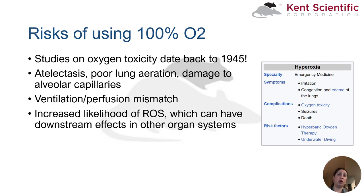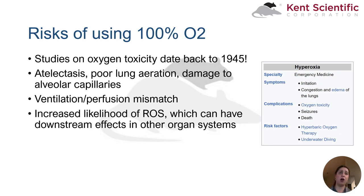First, some of the risks of using 100% oxygen as a carrier gas. In humans, oxygen toxicity has been studied — the earliest study we could find was published in 1945, so this is fairly well-known in human medicine, well-known to the point that there is an entire page on it on Wikipedia. Some of the risks seen in laboratory animals include complete or partial lung collapse, poor aeration, and damage to alveolar capillaries. There is also a ventilation-perfusion mismatch, and an increased likelihood of reactive oxygen species (ROS), which can have downstream effects in other organ systems — unintentional inflammatory factors that may affect systems we aren't actually looking at during our study.